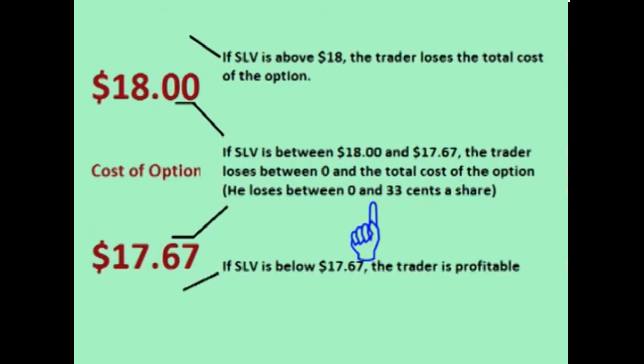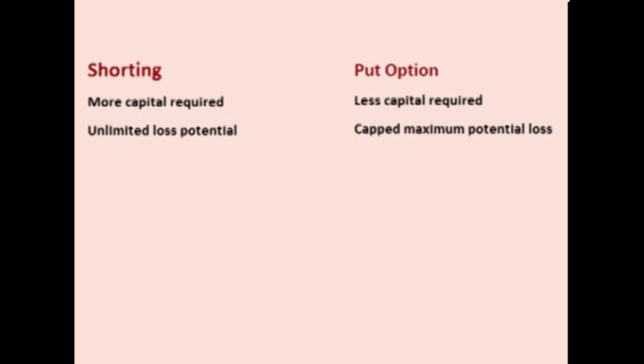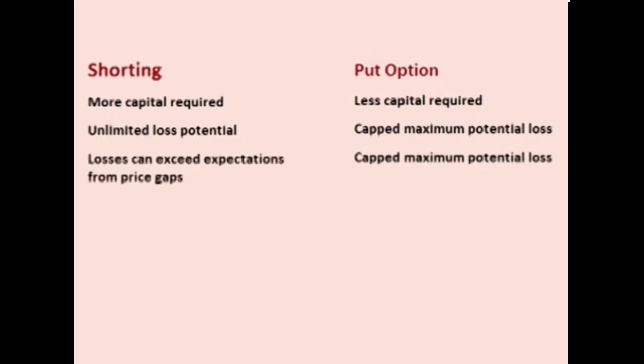Now let's compare shorting a stock versus buying a put option. Shorting a stock requires more capital up front. Buying the $18 put option only costs the trader $33 up front. If the trader shorts the stock and the stock rises in price, his losses are potentially unlimited as the stock can climb to any price. But by buying a put option instead, his possible losses are capped to a maximum fixed amount of $0.33 per share or $33 total plus commissions. Even if the trader shorts SLV and uses a stop loss to protect his account to a maximum loss, the price of SLV could gap overnight or over the weekend, causing him to lose more than anticipated. The possible losses on buying an SLV put option is capped to a fixed amount.